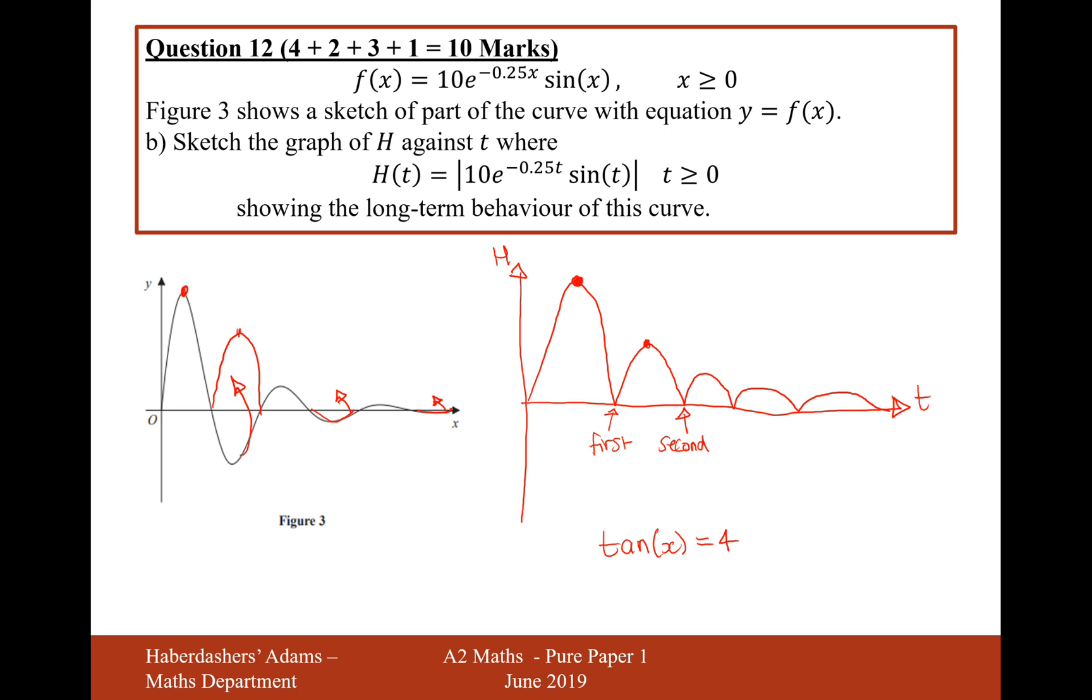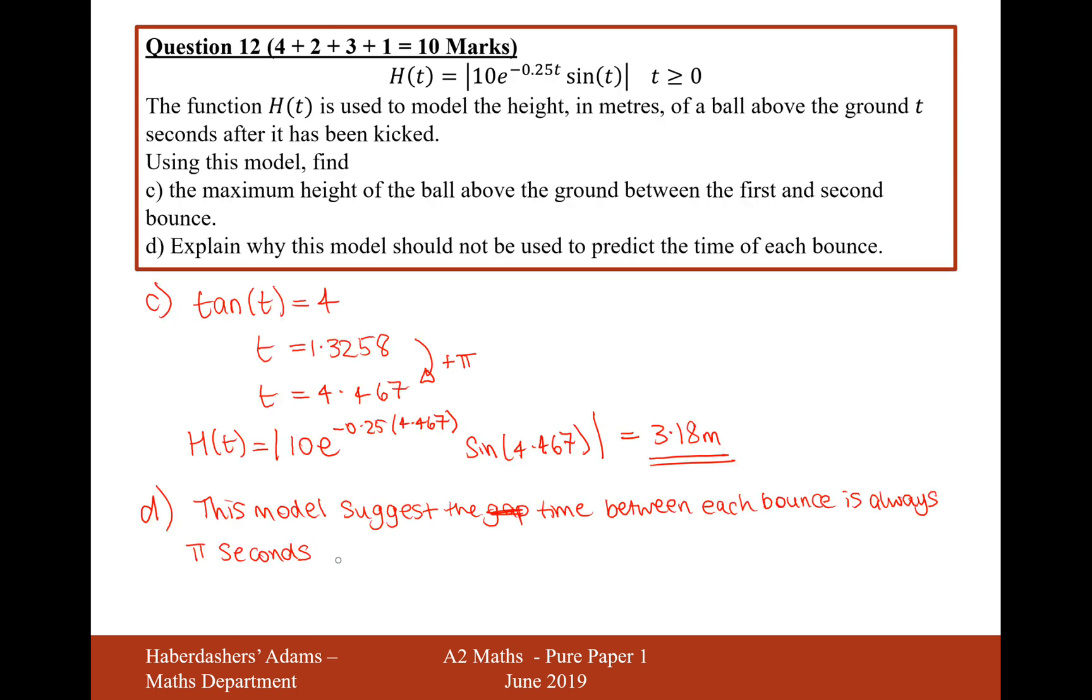The stationary points are every pi, but it also looks like the peaks are symmetric in some kind of way, so it looks like the bounces are going to be every pi radians, so every pi seconds, which will probably not happen, which is unlikely to happen.